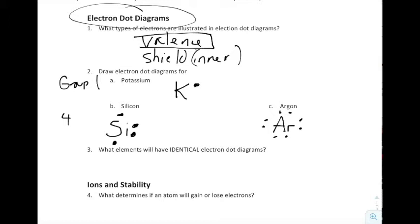What elements will have identical electron dot diagrams? That is anything that is in the same group, or the same column. All of those things will have the same valence electron structure with very few exceptions. For example, argon has the same valence electron structure as neon. But you'd have to be careful because it's not the same as helium, because helium only has two valence electrons available.